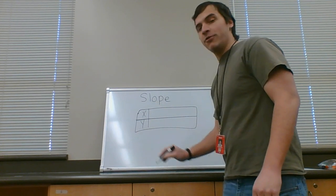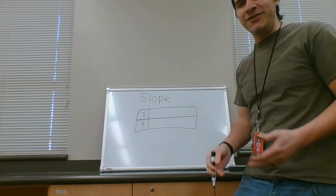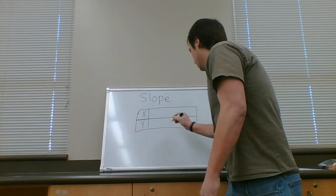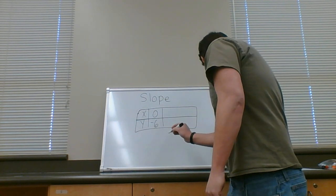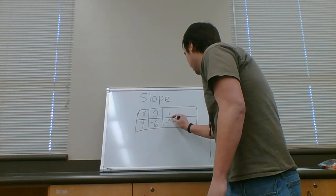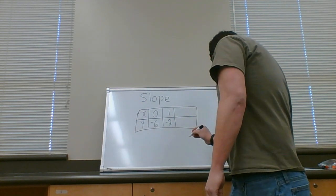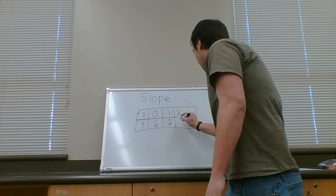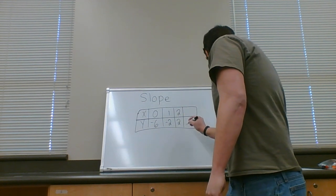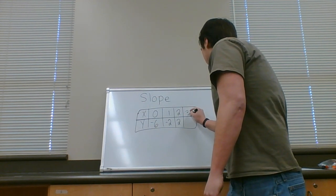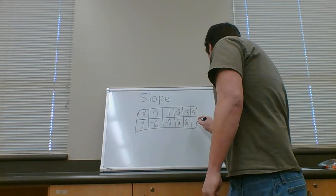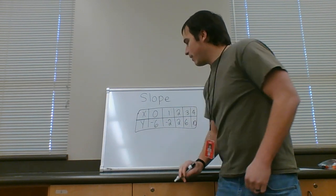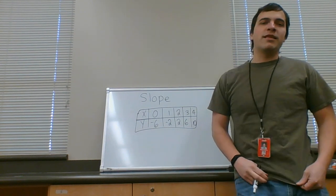An xy table. Sometimes tables are vertical. Sometimes they're horizontal. It doesn't actually matter. (0, -6) and (1, -2), (2, 2), (3, 6), (4, 10). Okay, to do this, once again,